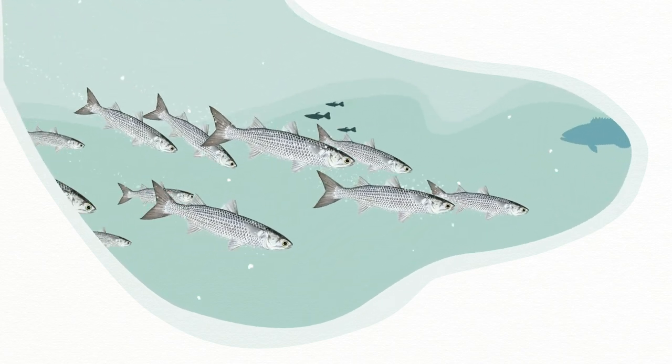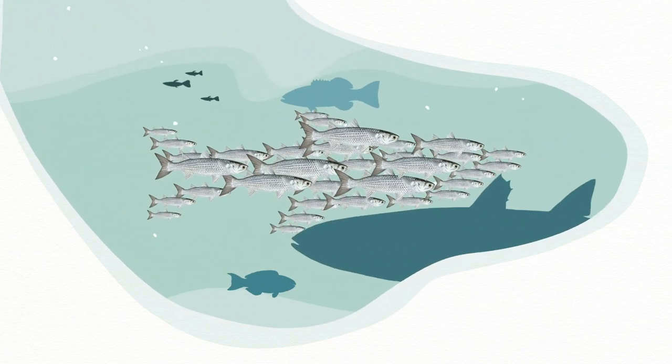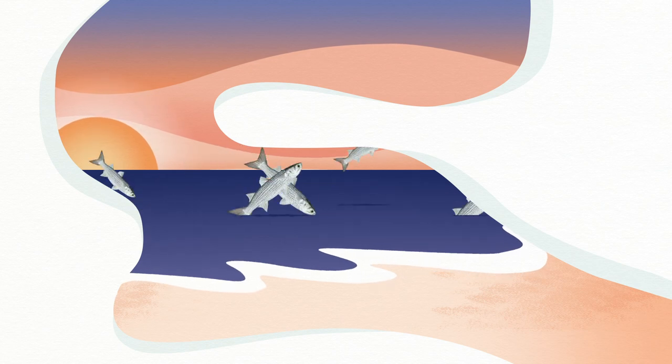And it is not alone. Mullets swim together for protection, and you've probably seen large schools passing near the shore.